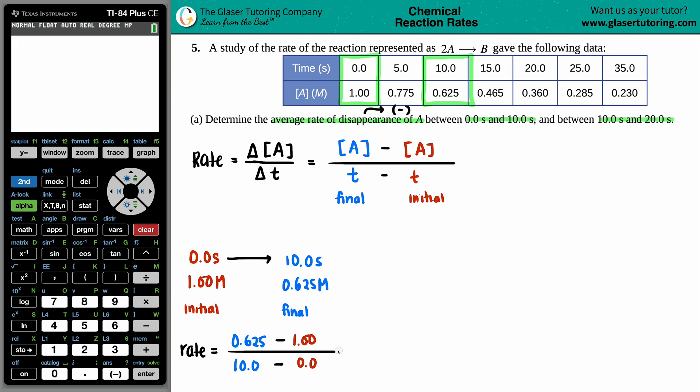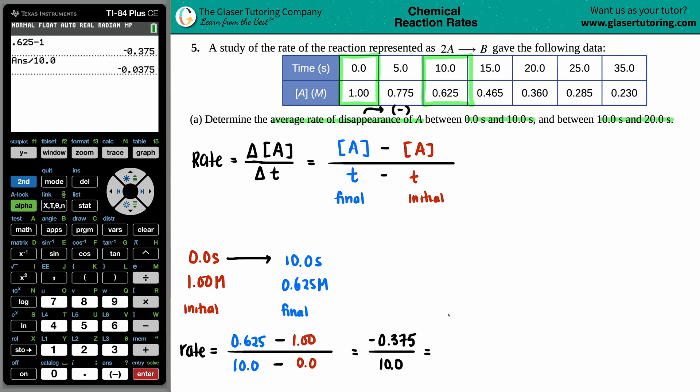So 10 minus 0 is 10, and we have 0.625 minus 1.00 - ah, there's the negative, and that's what we expected because it's disappearing. Let's divide: (0.625 - 1.00) / 10 = -0.0375.